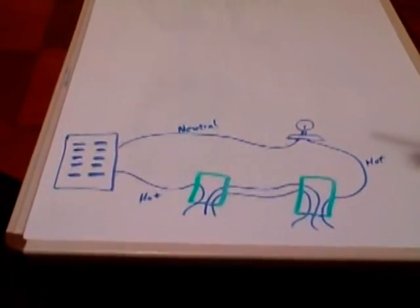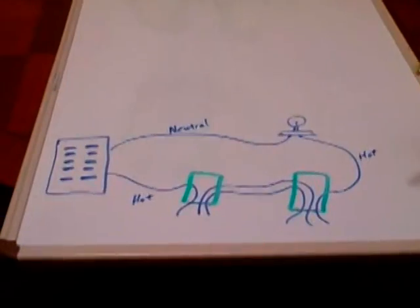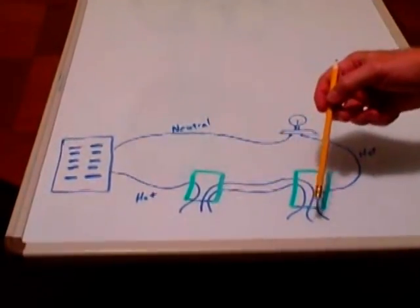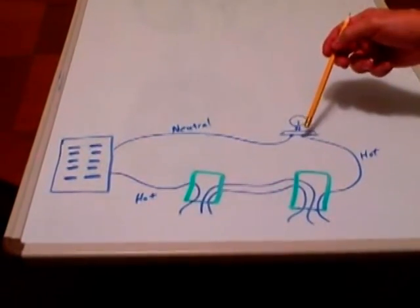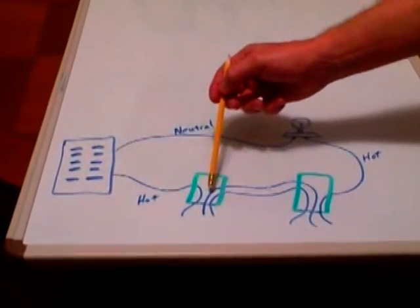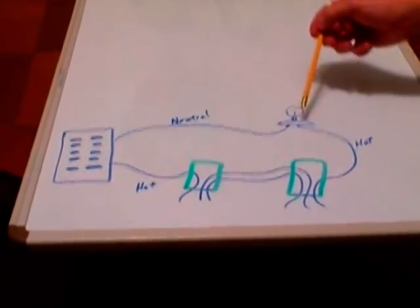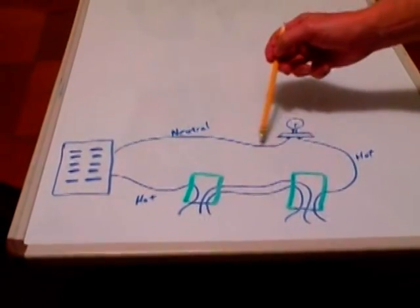This is a very simple illustration of what a circuit would look like if we removed the two three-way switches and it's going up to a light. You've got the hot coming in from the service panel. It's going to go through the two boxes up to your light and then you've got your white, your neutral coming back to the service panel.